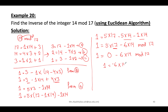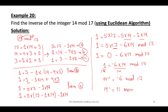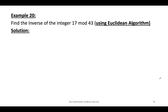So 14⁻¹ ≡ −6 mod 17. Since −6 is negative, add 17: −6 + 17 = 11. Therefore 14⁻¹ ≡ 11 mod 17. If the value had been positive, that value itself would be the inverse. Try the follow-up question on your own using the Euclidean algorithm.